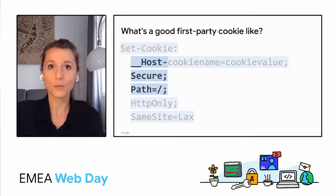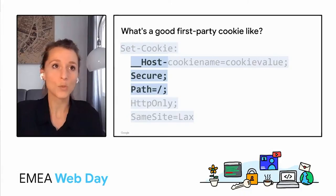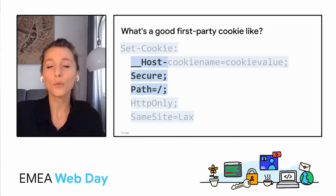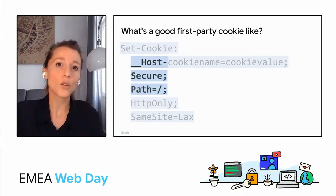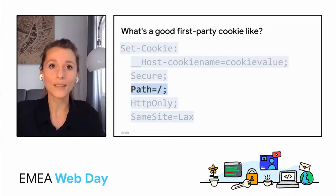So __Host is a prefix. It works like an interface in the sense that it makes some attributes mandatory and forbids others. More specifically, the attributes Secure and Path=/ must be present, and the attribute Domain must be absent, which is why you cannot see it on this slide. Secure and HttpOnly help protect cookies from being stolen either on insecure networks or by malicious third parties. Path goes hand in hand with the Domain attribute, and since Domain is not set, the cookie is accessible only at the domain that sets it — the domain of the current document, not even subdomains.